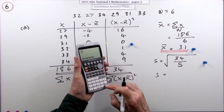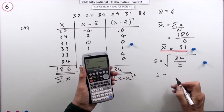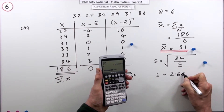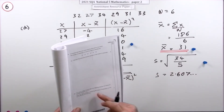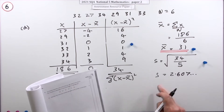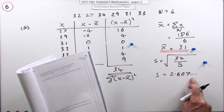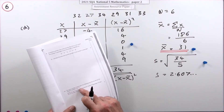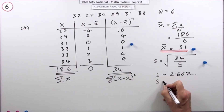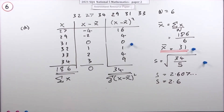Press the button and you get 2.607... Now check - in Part b, the standard deviation given is 3.2, which is to one decimal place, so round this to one decimal place as well: 2.6. That's the last mark.